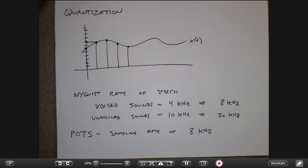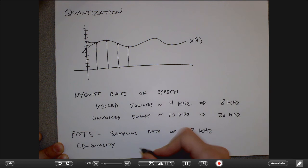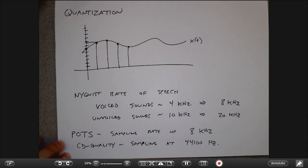When you call somebody on the phone, you don't get the fidelity of speech that you would from a CD recording. A CD is sampled at 44,000 hertz roughly — basically twice the frequency limit of what the human ear can hear, which is about 20 kilohertz. The telephone system is much less than that, but certainly good enough to get by. CD quality is basically sampling at 44 kilohertz, about four times faster than the telephone system.